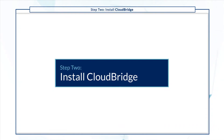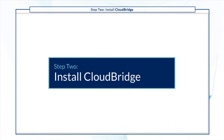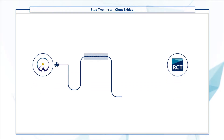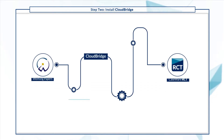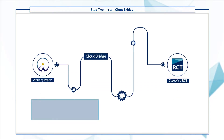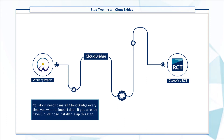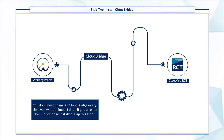Next, install CloudBridge. This is a utility that enables you to transfer data from Working Papers to RCT. Note that you don't need to install CloudBridge every time you want to import data. If you already have it installed, skip this step.